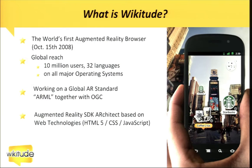We currently have a global reach of about 10 million users in 32 languages and offer the application for all major mobile operating systems. We are also working together with the OGC on an augmented reality standard called ARML — Augmented Reality Markup Language. It's currently at version 2.0 and is a candidate standard within the OGC.